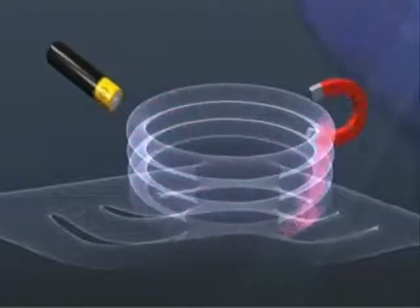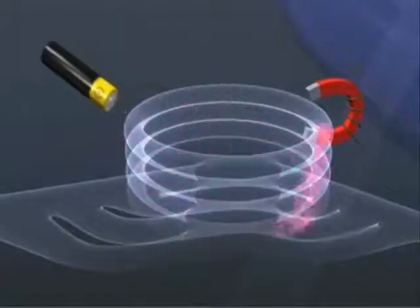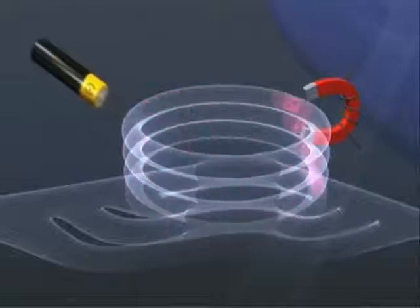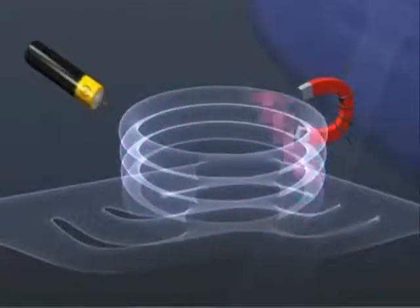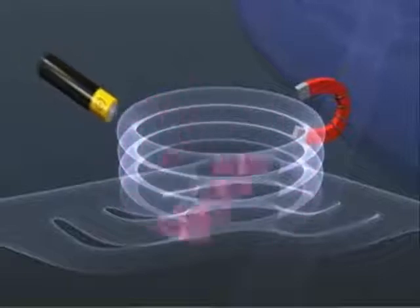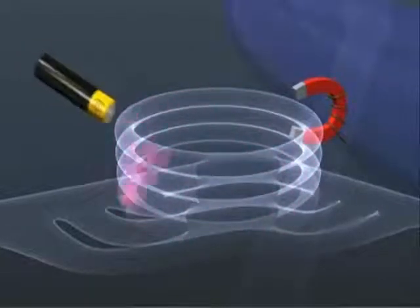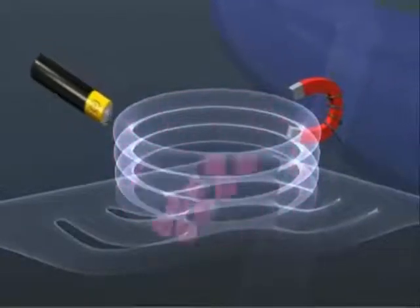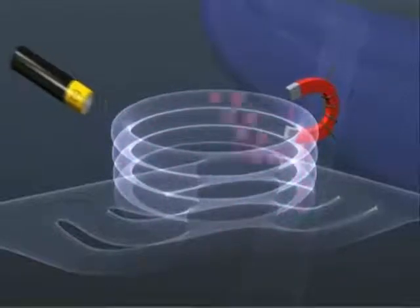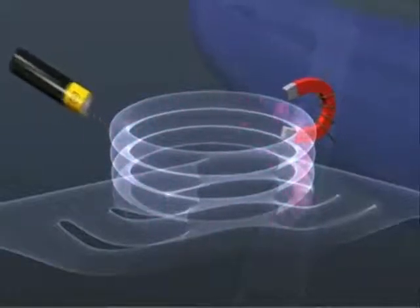Magnets exert a force on the passing protons at right angles to their direction of motion, and so powerful electromagnets are used to bend the beam of protons round the circle. The booster accelerates the protons up to 91.6% of the speed of light, and squeezes them closer together.